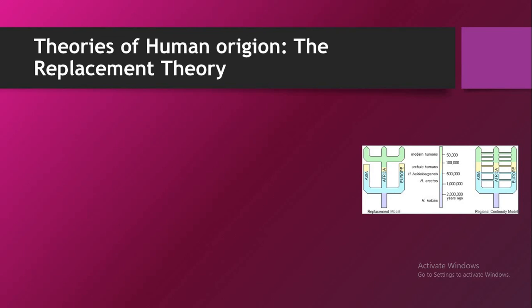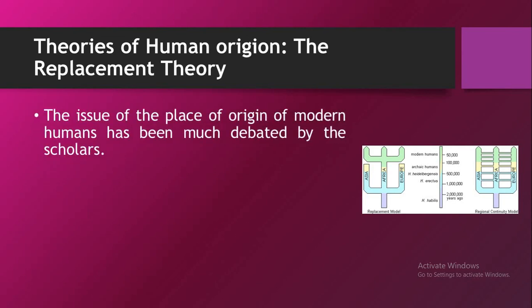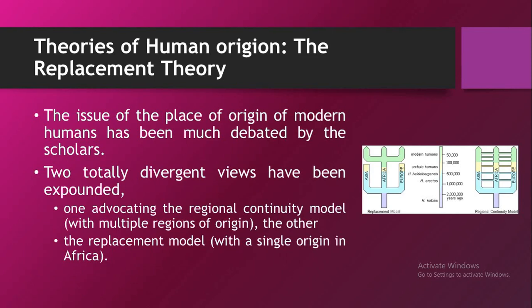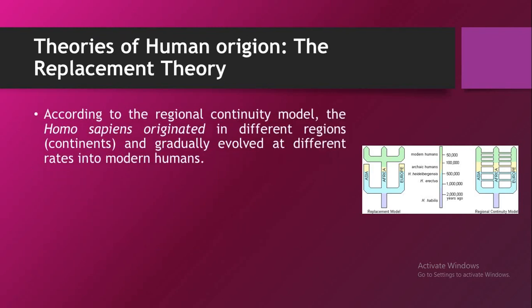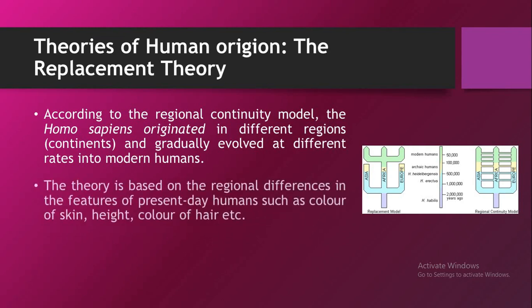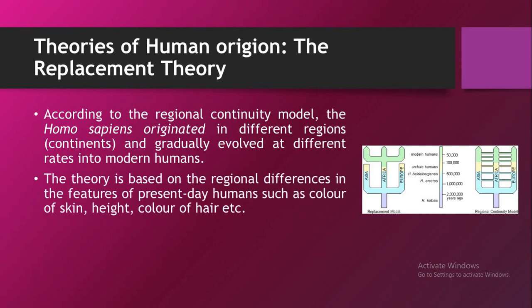Now let us study the theories of human origin. First we will study the replacement theory. The issue of the place of origin of modern humans has been much debated by scholars. Two totally divergent views have been expounded: the regional continuity model with multiple regions of origin, and the replacement model with a single origin in Africa. According to the regional continuity model, Homo sapiens originated in different regions or continents and gradually evolved at different rates into modern humans. This theory is based on regional differences in features of present-day humans such as colour of skin, eye colour, hair colour, etc.